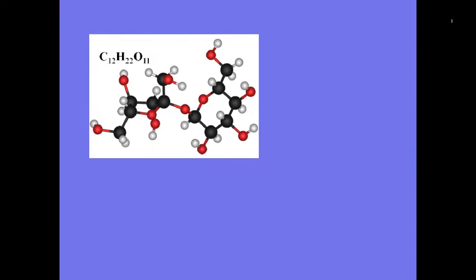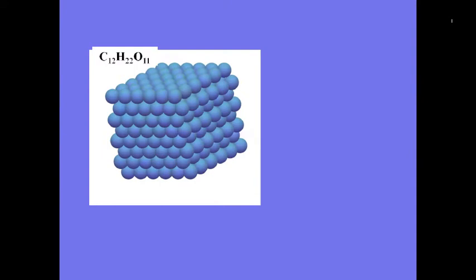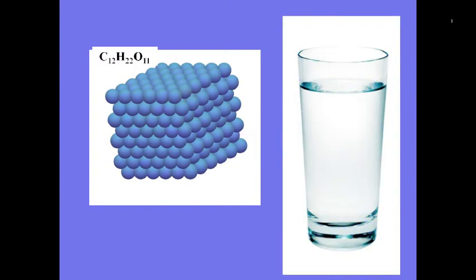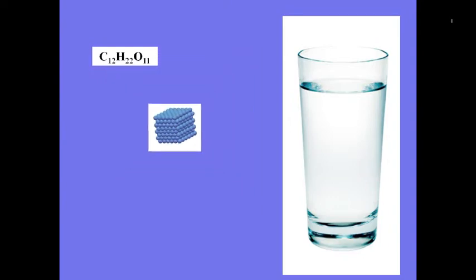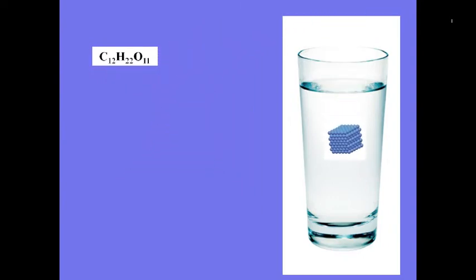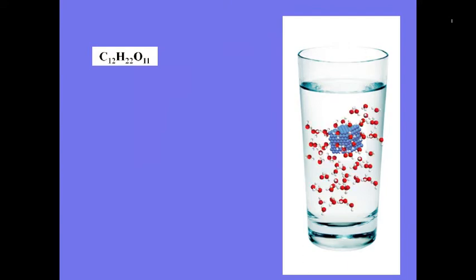Now that we know how to define the term solution, we need to examine the chemistry of how a solution actually forms. Sure, we know everything's all mixed up in there, but let's take a closer look. Here you see a sugar molecule, sucrose. I'm going to shrink this molecule down and convert it into an image of its crystalline form. When I drop a sucrose crystal in a container of water, the games begin. The massive amount of water molecules are able to overwhelm the organization of the lattice and break it apart, causing it to dissolve.